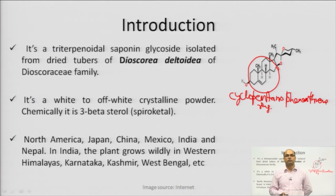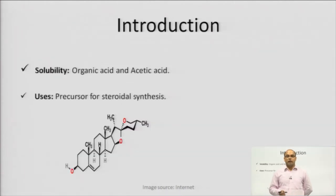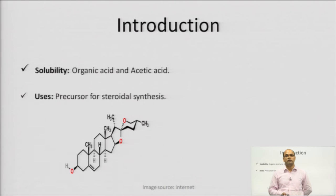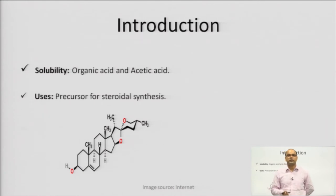Since we are concerned about phytochemical isolation, we should know in which solvent this phytoconstituent will be extracted. Diosgenin is soluble in organic acids and acetic acid, so we have to use these acids for isolation of this particular phytoconstituent. As far as the uses of diosgenin are concerned, it is mainly used as a precursor for the steroidal synthesis of various hormonal preparations.